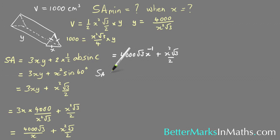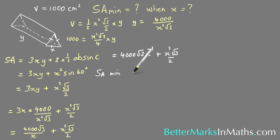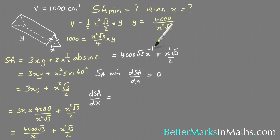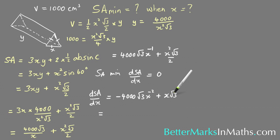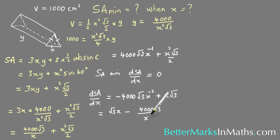For a minimum surface area, we need dSA/dx equals zero. Taking the derivative: the first term gives minus 4000 root 3 times x to the minus 2, and the second term gives root 3 x, since the 2 from the power cancels with the 2 in the denominator. This can be written as root 3 x minus 4000 root 3 over x squared.